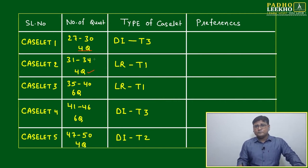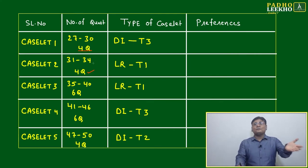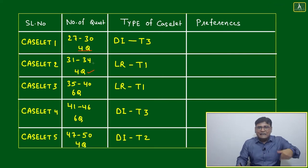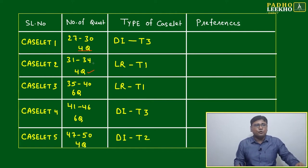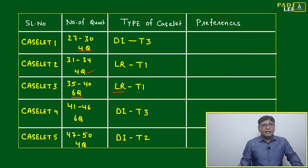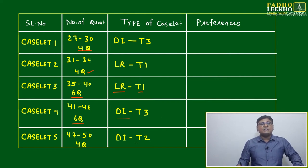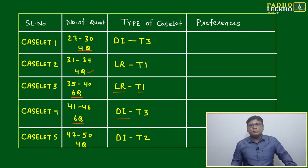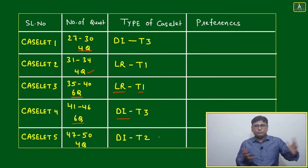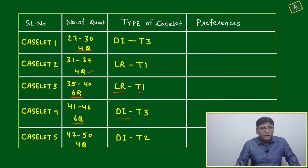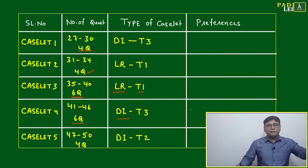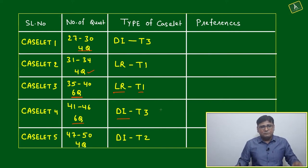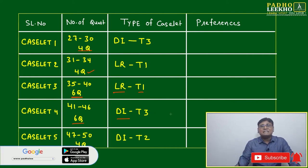The number of questions matters because your first target is to cross the cutoff, next is to cross 90 percentile, then to touch 99 or 100 percentile — whatever is best possible for you. Caselet three has six questions, LR Type 1; caselet four has six questions, DI Type 3; caselet five has four questions, DI Type 2. This data is very useful. Based on the content, you can categorize well — but next, how do you prioritize? Which caselet to pick first among these five? Preference 1, 2, 3, 4, 5 — which caselet should you start with?